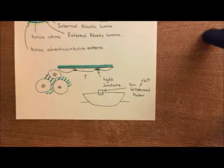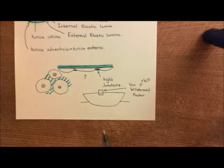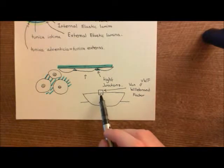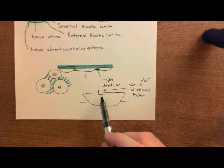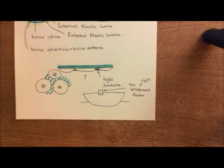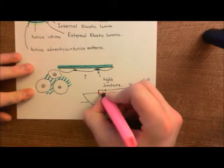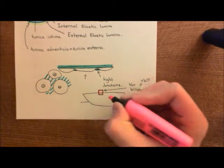Welcome to this next video in which we are discussing the antithrombotic mechanisms of the endothelium. We now have discussed that the endothelial cells have on their basolateral membrane von Willebrand factor. I'll color in von Willebrand factor in pink here. So in pink, this is von Willebrand factor.